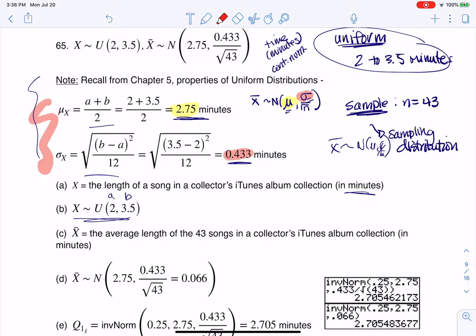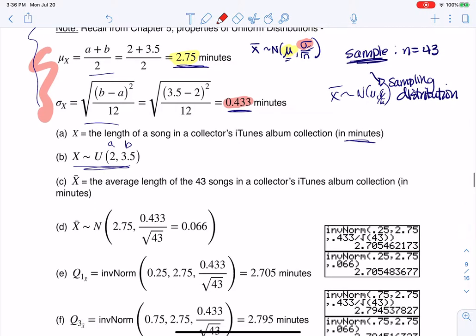And then part C asks, what's X-bar? Well, that's the average length of the 43 songs in the iTunes album collection. And then I get to say that that distribution—and I'm going to talk about why I can put the N here in a moment—but we know the mean stays the same.